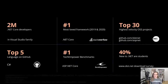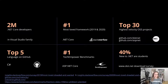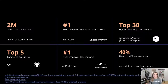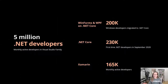The .NET ecosystem is growing and thriving. C# continues to rank highly — it's top five on GitHub. .NET Core is the number one most loved framework in the Stack Overflow Developer Survey for the past two years. 40% of new .NET developers are students. There are five million .NET developers targeting everything from Windows to Linux to cloud computing and mobile with Xamarin.